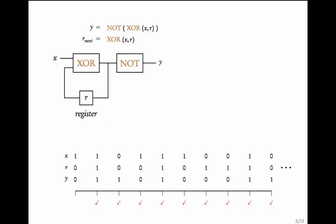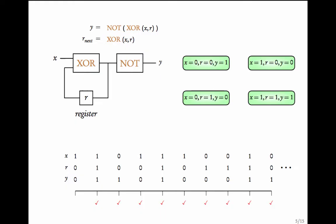We are going to model this circuit as a transition system with states and transitions. The states of the circuit are determined by the values of X, R, and Y. X and R can each be 0 or 1, and Y is determined by X and R. There are four states depending on the values of X and R: two states with X being 0 (one with R=0, one with R=1) and two states with X being 1. These are the four states of this circuit.